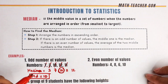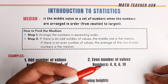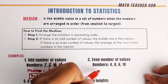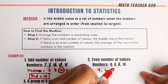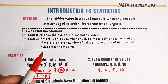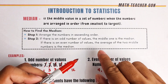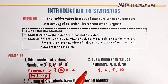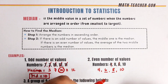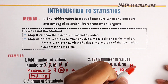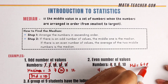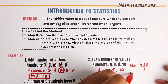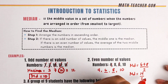Now, what about example number 2? We have an even number of values, so we rearrange in ascending order: 4, 6, 8, and 10. Since there is an even number of values, the average of the two middle numbers is the median. We have 4 numbers here, and the two middle numbers are 6 and 8. So median equals 6 plus 8 equals 14 over 2.